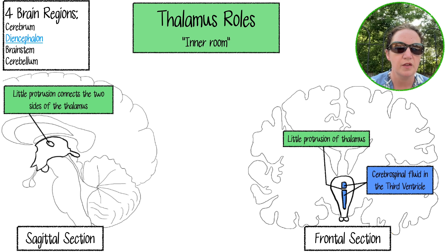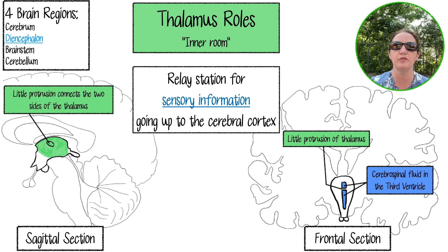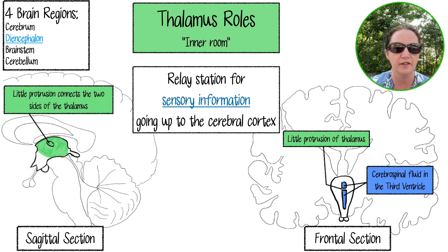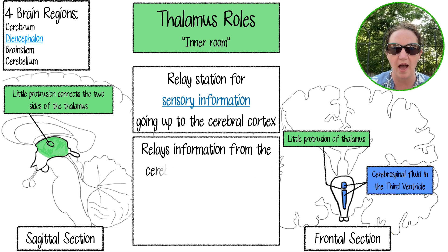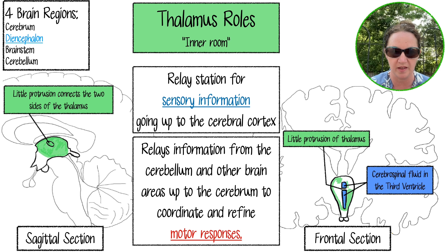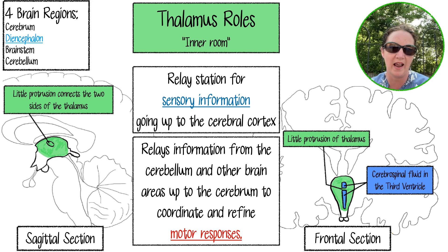The thalamus primarily serves as a relay station. A lot of sensory information from the body comes in through the thalamus, which sorts it and sends it up to the appropriate part of the cerebral cortex. The thalamus also has important roles in motor responses — it gathers information coming from the cerebellum and other brain areas, then sends those signals up to the cerebrum to help plan and execute motor output, coordinating and refining motor responses.